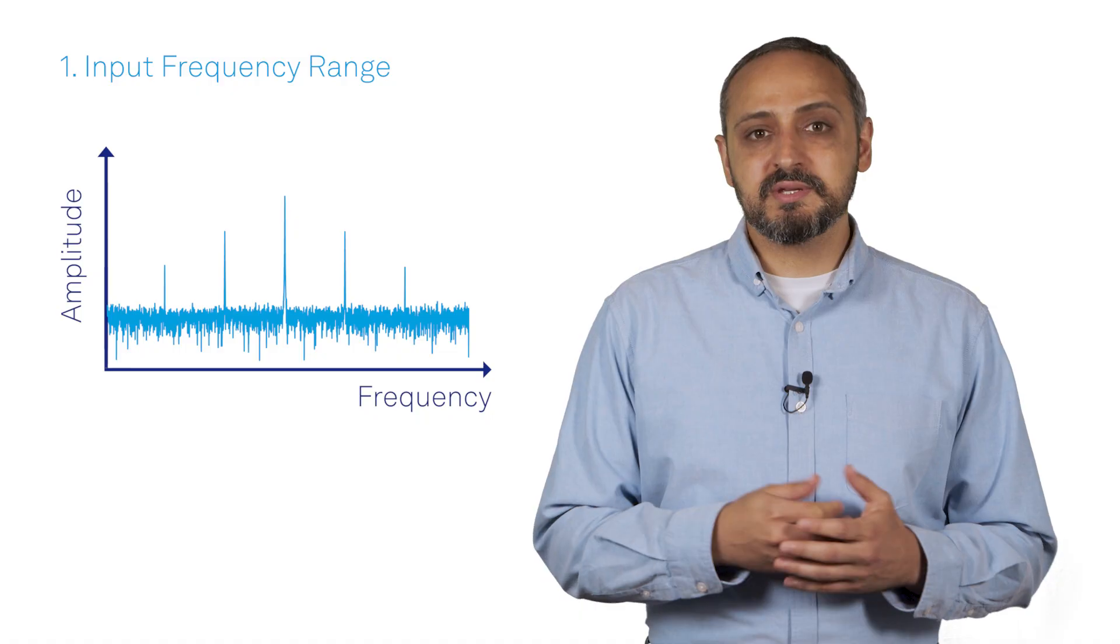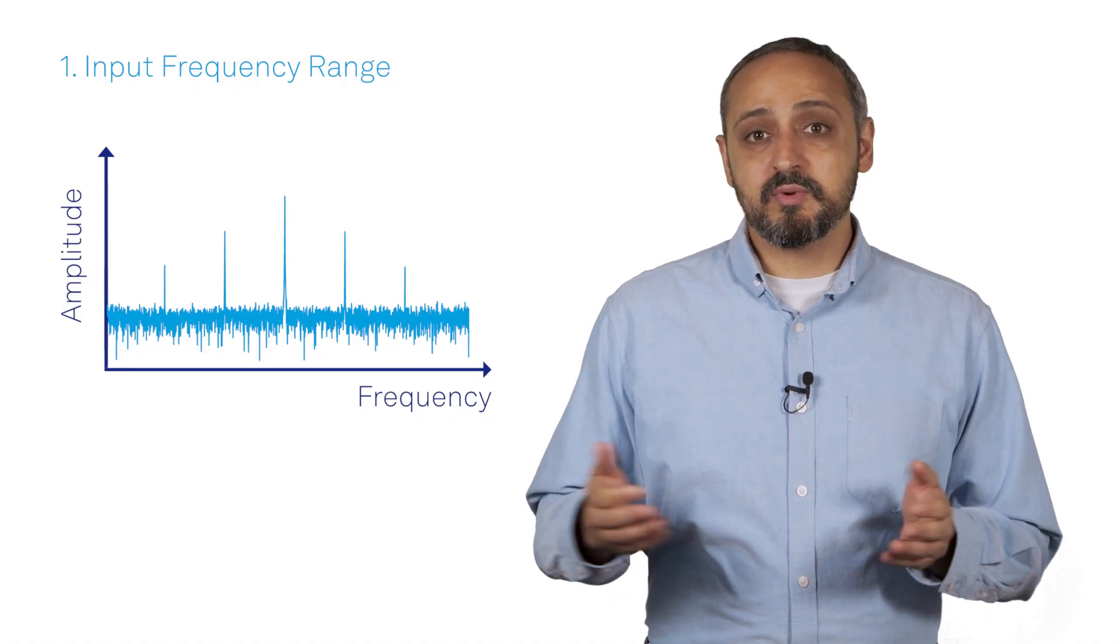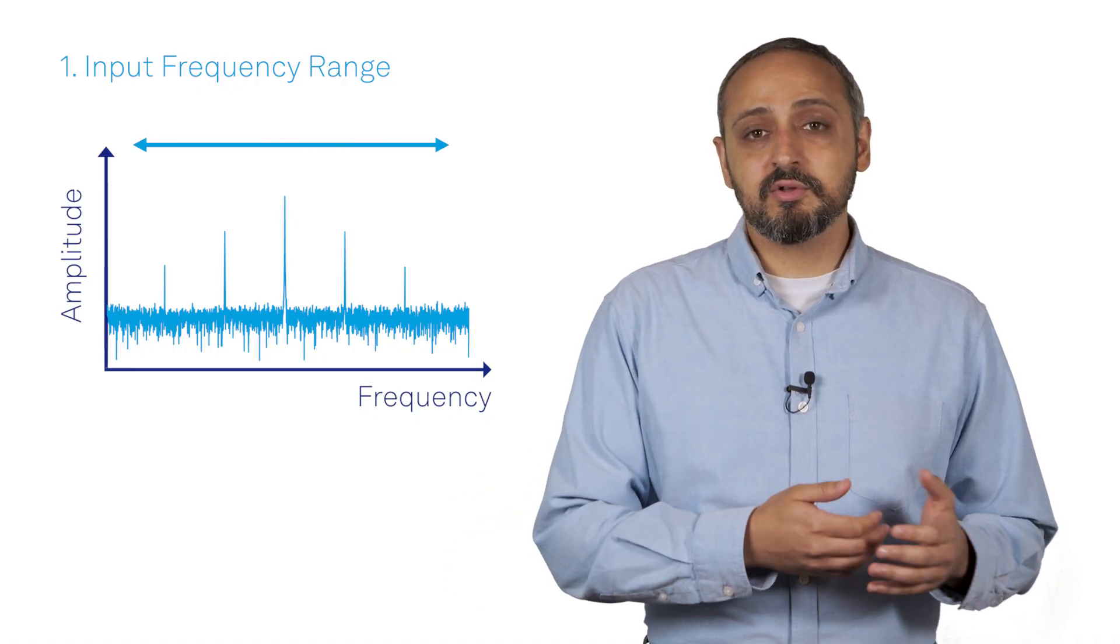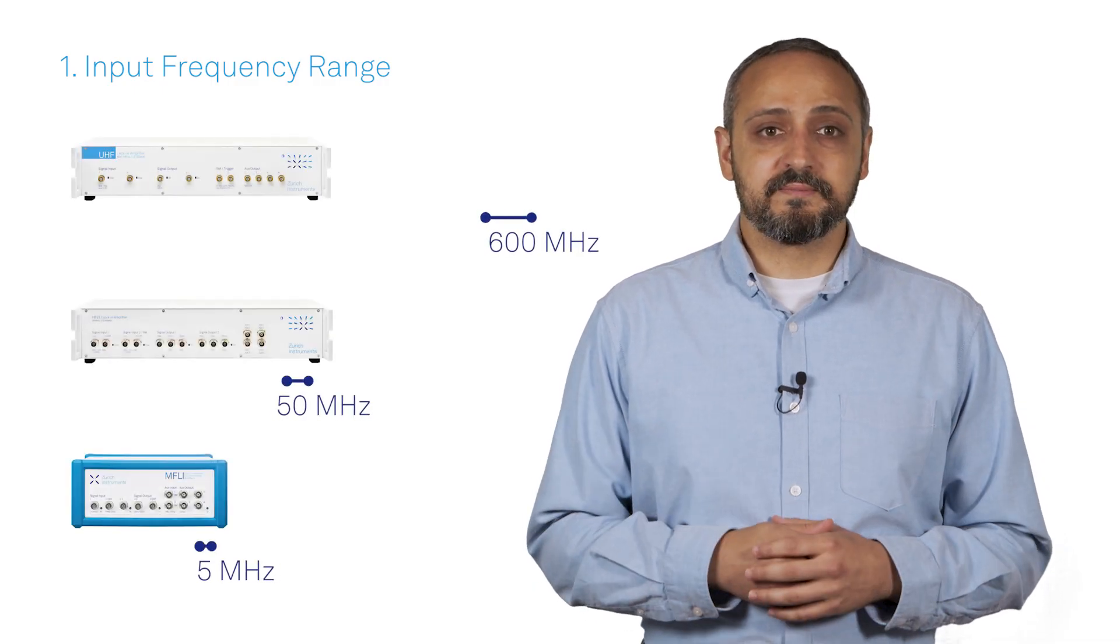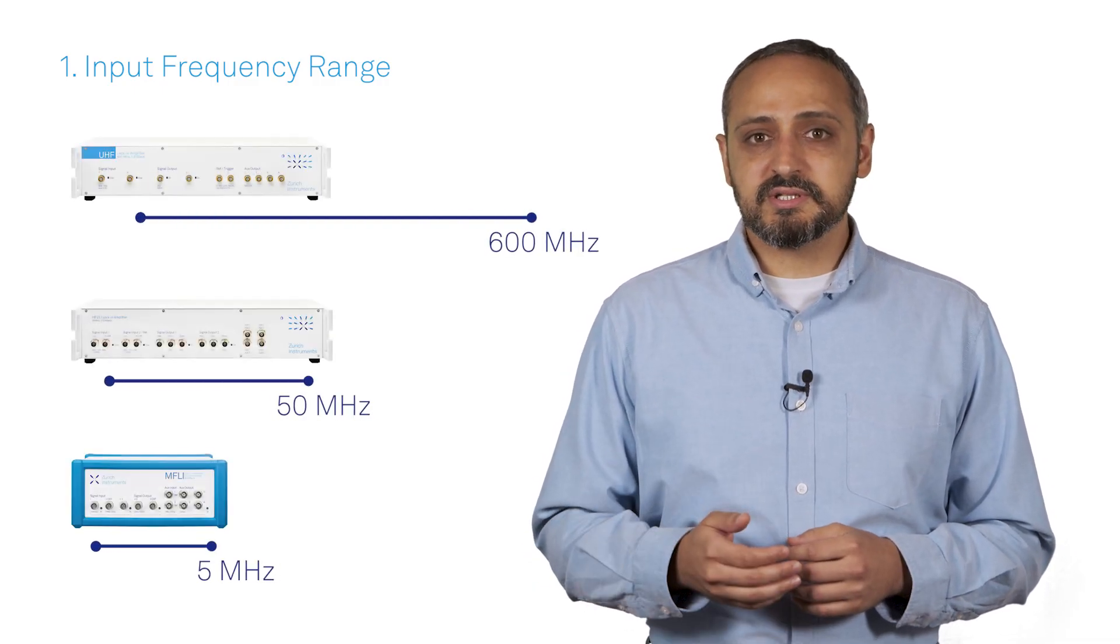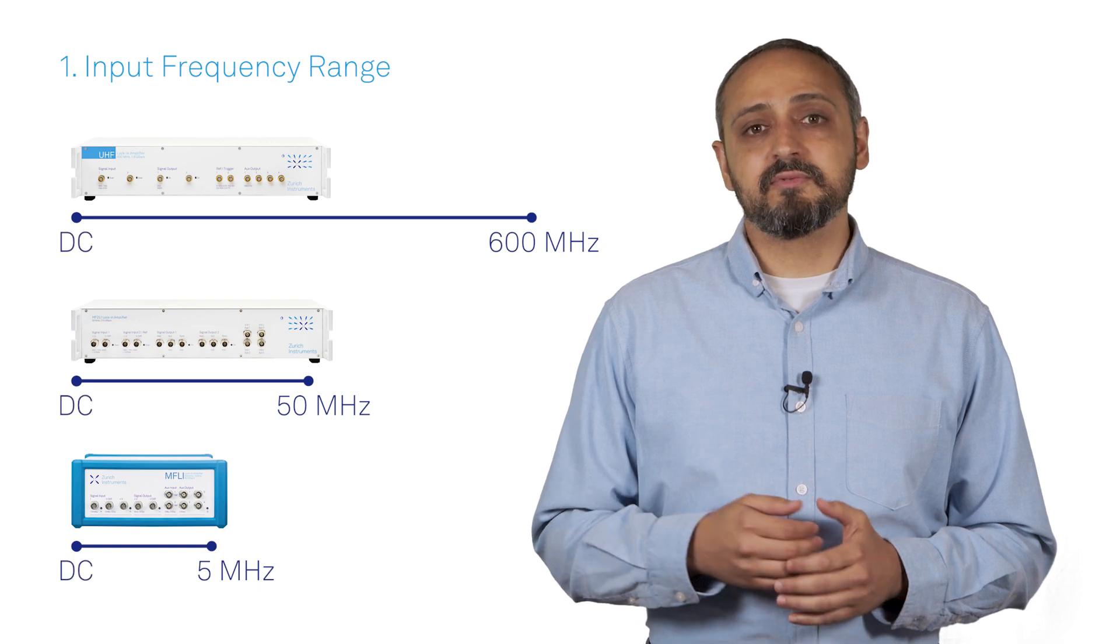An excellent starting point when deciding on a lock-in amplifier is the instrument's input frequency range, as it needs to be wide enough to capture the signal of interest. However, it's not just the upper frequency limit. Depending on your application, low frequencies and even DC might be relevant too.